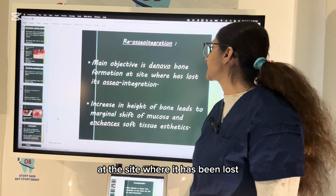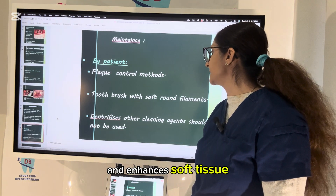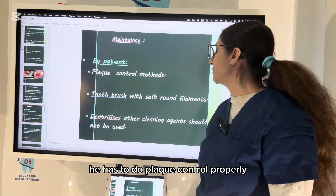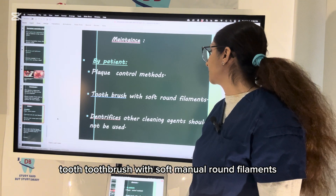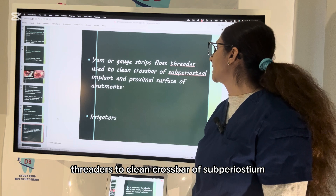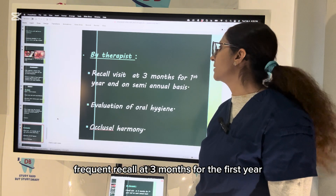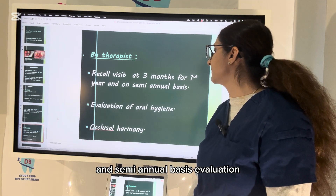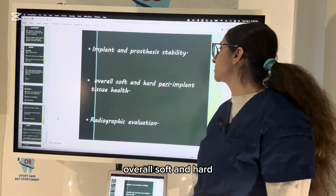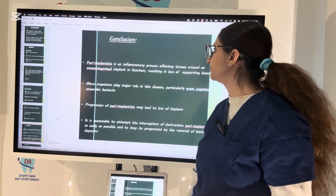Re-osseointegration's main objective is de novo bone formation at the site where bone has been lost. Osseointegration increases bone height, leads to marginal shift of mucosa, and enhances soft tissue aesthetics. Maintenance is very important — the patient must perform proper plaque control using a toothbrush with soft manual round filaments, dentifrice, gauze strips, floss threaders to clean the crossbar of subperiosteal implants and proximal abutment surfaces, and irrigators. Frequent recall visits at three-month intervals for the first year and semi-annual basis thereafter, with evaluation of oral hygiene, occlusal harmony, implant and prosthesis stability, and overall soft and hard peri-implant tissue health along with radiographic evaluation.